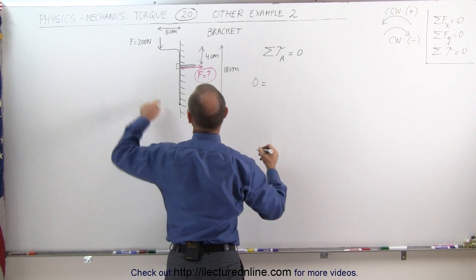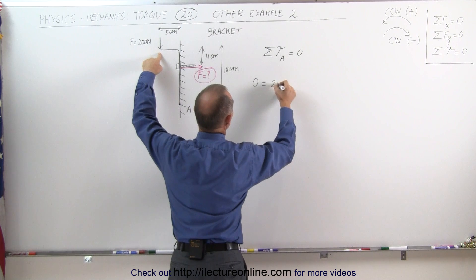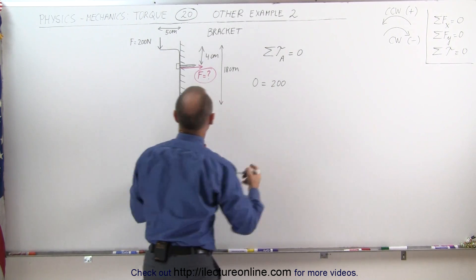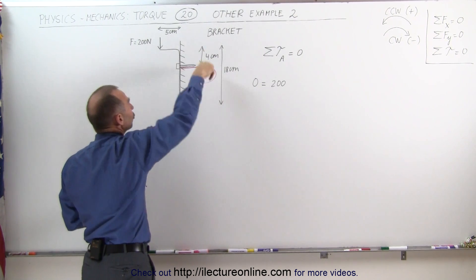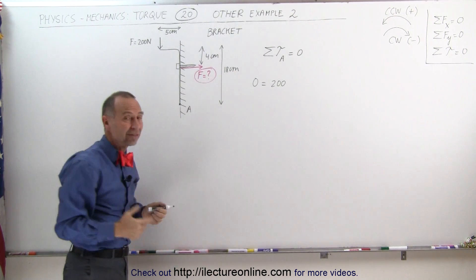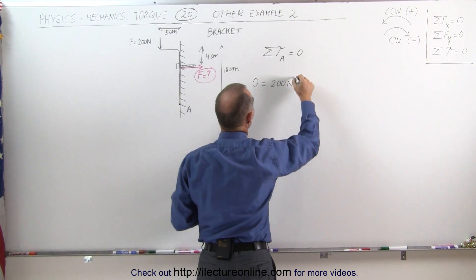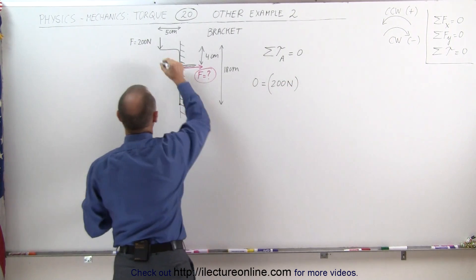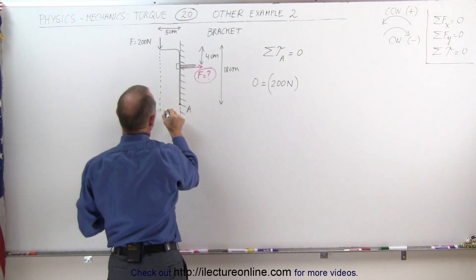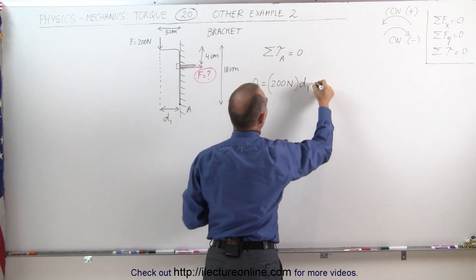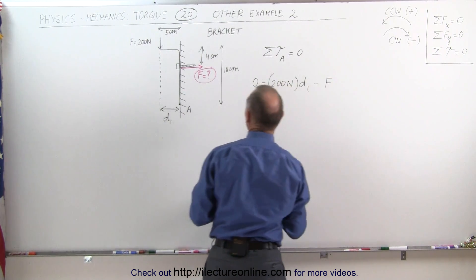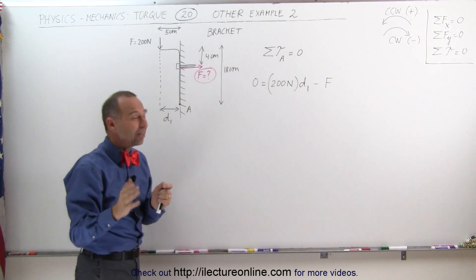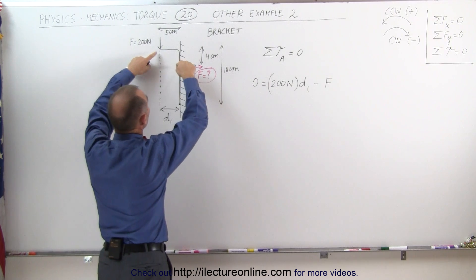Zero equals the 200 newton force, that would be 200 newtons. And is that a positive or negative torque? Well notice that this would cause a counterclockwise torque. A counterclockwise torque is a positive torque. That means we have 200 newtons times the perpendicular distance from the line of action of the force to the pivot point, which is this distance right here. Let's call that distance 1. Minus the force from the screw, the force on the screw—that's what we're looking for—times the perpendicular distance. And again, why did I say minus?